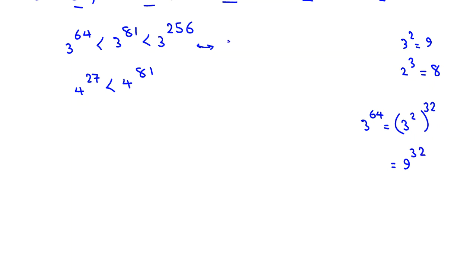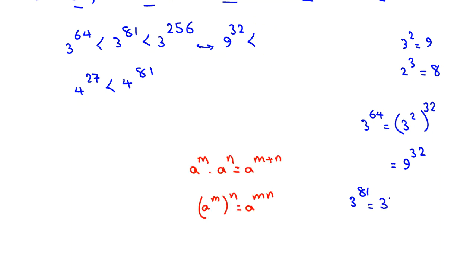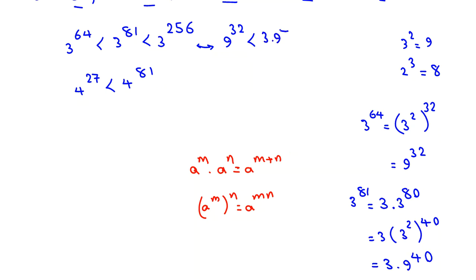So 3 to the 81 equals 3 times 9 to the 40. Similarly, 3 to the 256 can be written as 3 squared to the 128, which equals 9 to the 128. So for our base-3 expressions converted to base 9, we have 9 to the 32, 3 times 9 to the 40, and 9 to the 128.